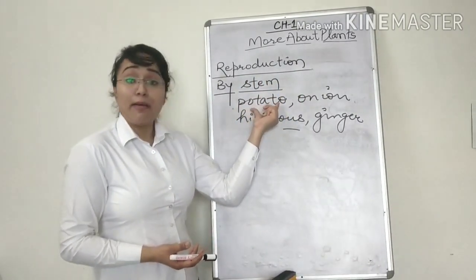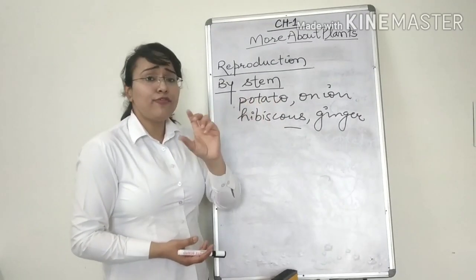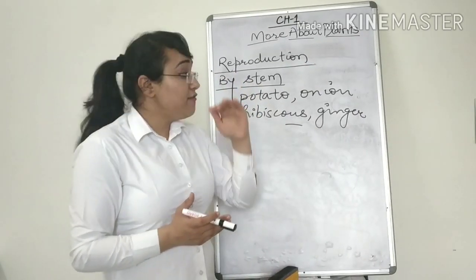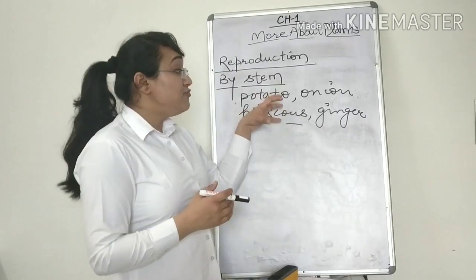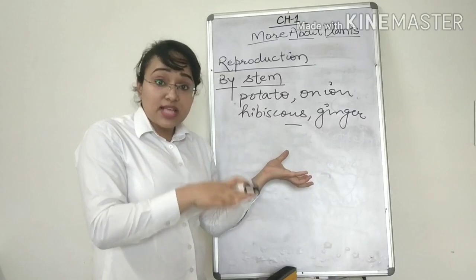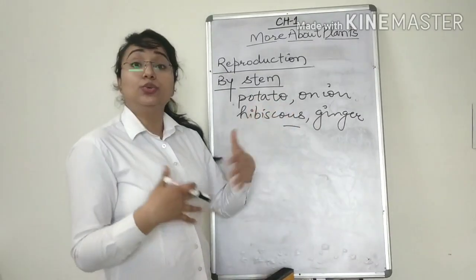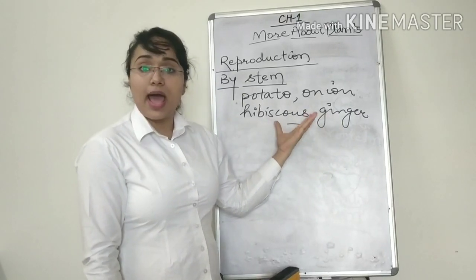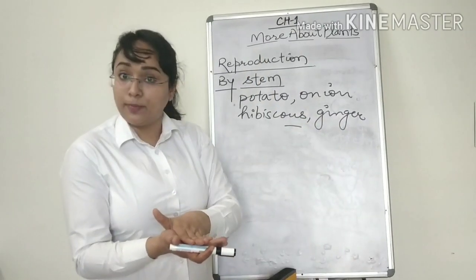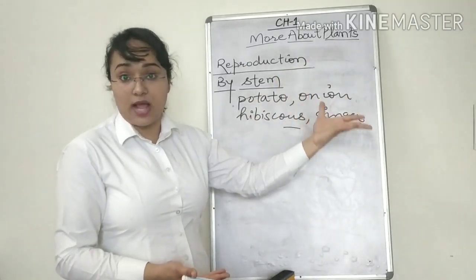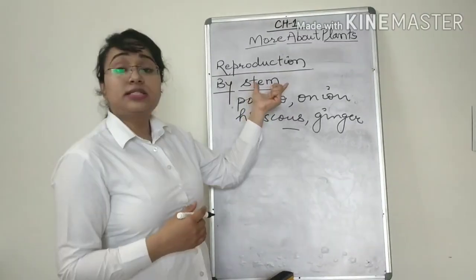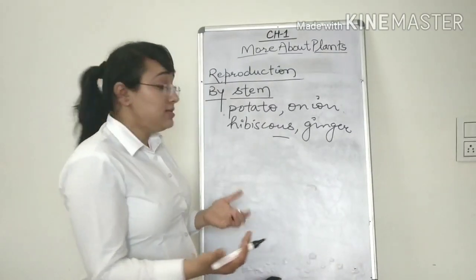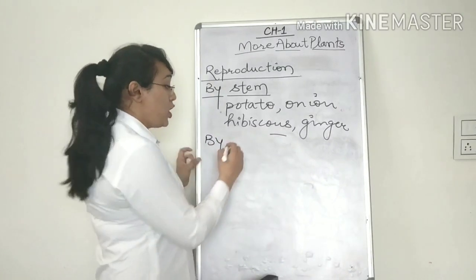Now if you take a stem of a potato or if you have ever seen a potato, the surface of the potato has small buds called eyes. If we cut the potatoes in different parts and we grow it into a soil and we give it sunlight, proper water, proper air, it will grow into a plant. Likewise, using the stems of these plants and growing them again in another pot, we can actually grow these plants or we can reproduce these plants. So this is how some plants are grown using the stem.